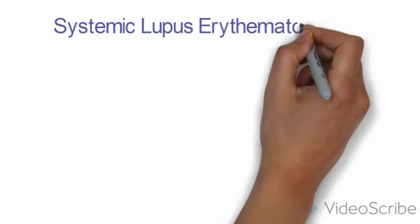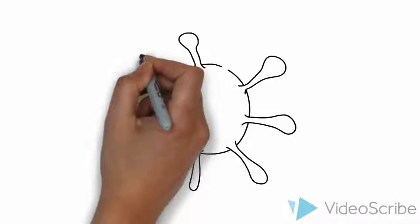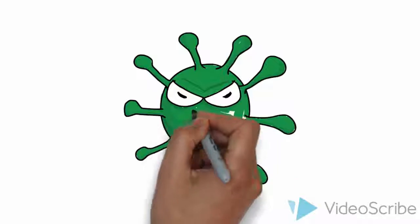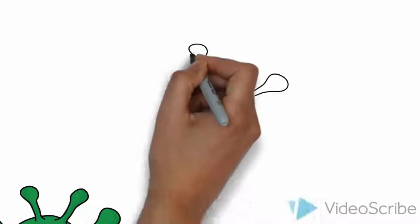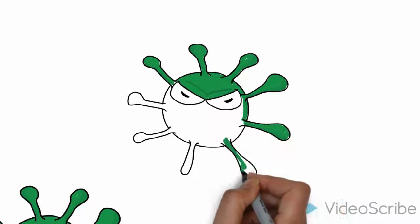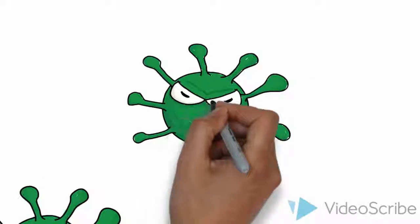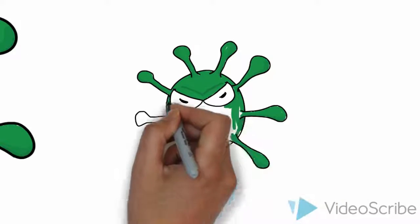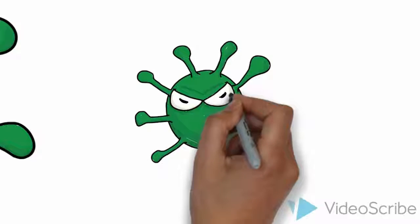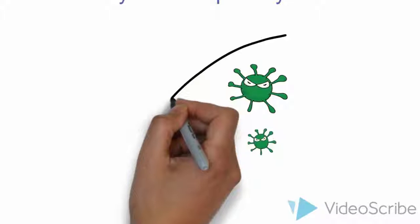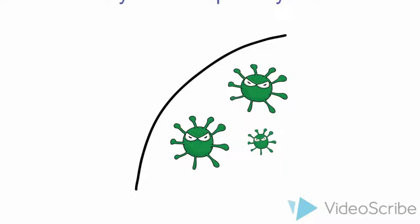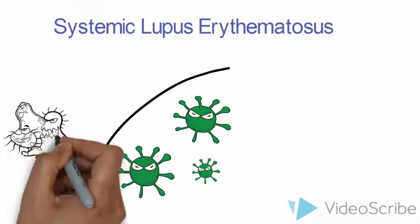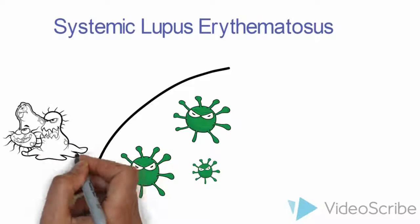So, systemic lupus erythematosus — how does lupus affect the body? Usually, our immune system protects the tissues from invaders. We basically have these green creatures that represent our immune system, and we know that our immune system protects the tissues from invaders. But lupus, being an autoimmune disease, means that the immune cells start to attack the very tissue they're supposed to protect.